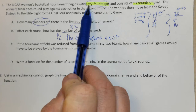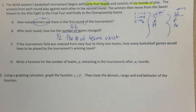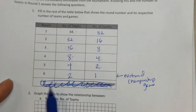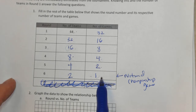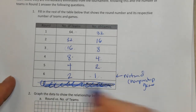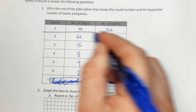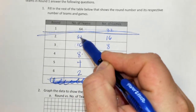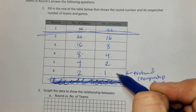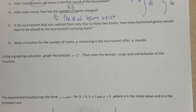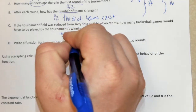Before part C, notice that for 64 teams it takes 6 rounds to find the winner. Again, 64 teams, it takes 6 rounds until we have 1 game and 1 winner. Part C says let's make a prediction: if the tournament field would be reduced from 64 to 32, how many basketball games would have to be played to find a winning team? Starting with 32, this is round 1, round 2, round 3, round 4, and round 5 — so 1 less round, 5 complete rounds.